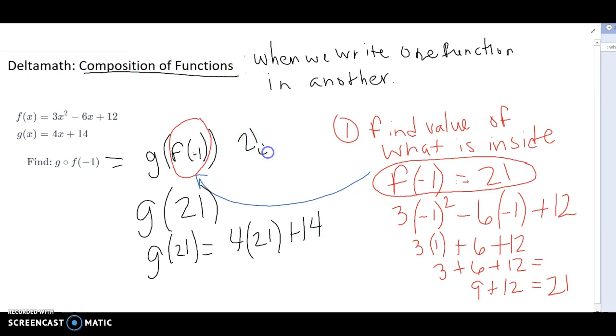So let's do that math real quick. 21 times 4, that's 4, 8. So it's going to be 84 plus 14. So that's going to give me 98. So our final answer here is 98.